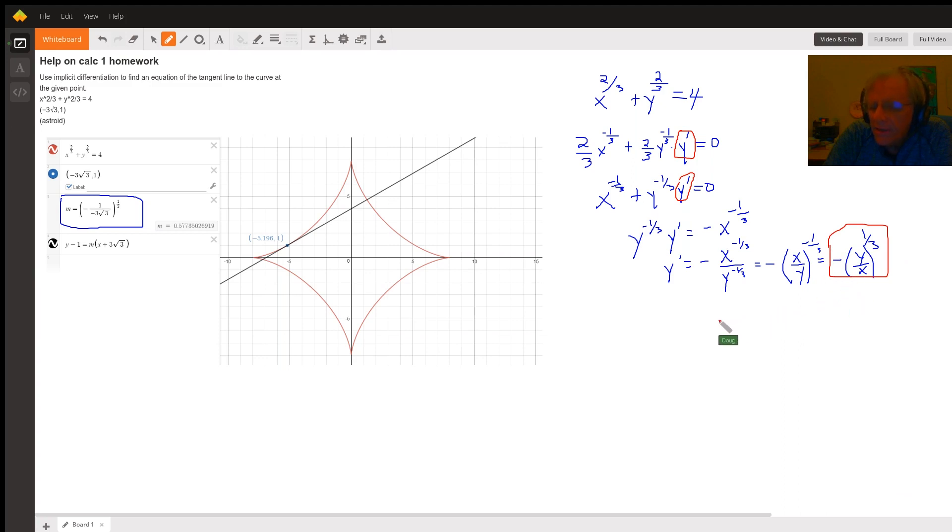And so I'm plugging in to get the slope. For y, I'm plugging in a one, because that's the point that we're writing the equation of the tangent line. And for x, I plug in negative three radical three. And I raise that whole thing to the one-third power. And of course, I could have simplified this, and I could have rationalized by multiplying top and bottom by the square root of three. And that would get radical three over nine.